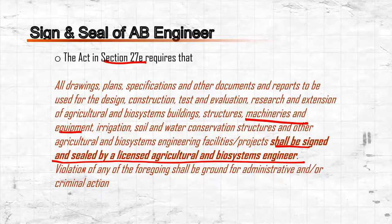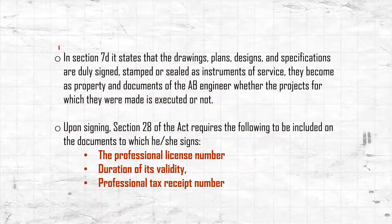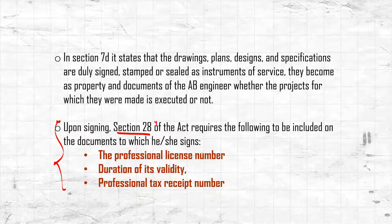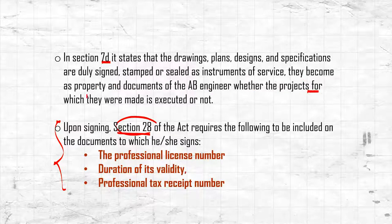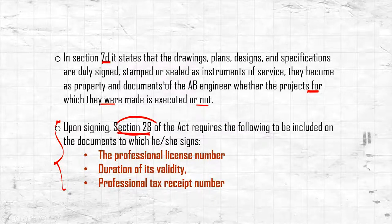Under Section 37E of RA 10915 regarding sign and seal: upon signing, we need the professional license number, its validity duration, and the professional tax receipt number. Under Section 7D, drawings, plans, and design specifications that are signed, stamped, or sealed as instruments of service become the property and documents of the ABE engineer, whether or not the project is executed.